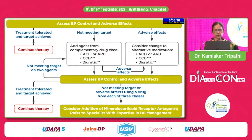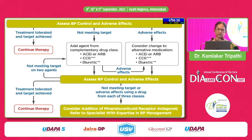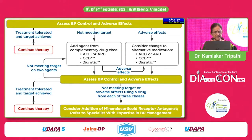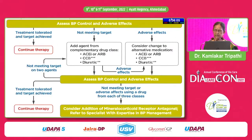We must go on assessing the BP every time the patient comes. He can keep his measurements at home — if he maintains a diary like blood sugar, we can also know about his compliance, so ask him to keep it. If the treatment is tolerated and target is achieved, continue the same treatment. If target is not achieved and BP is still high, we can go on adding drugs. If there are adverse effects, revise the treatment.